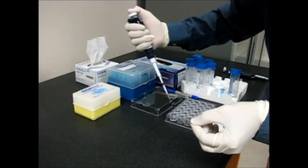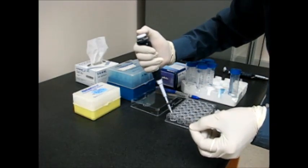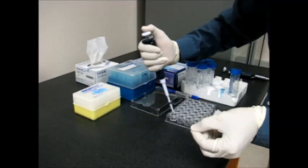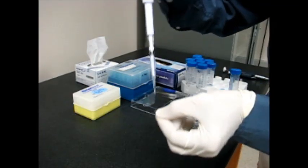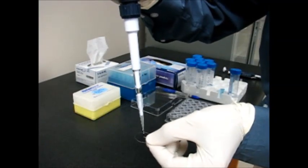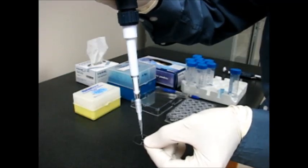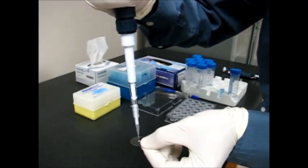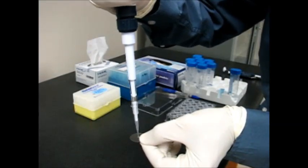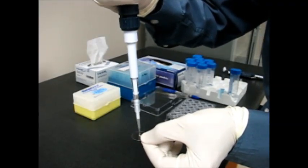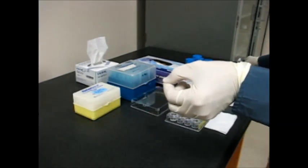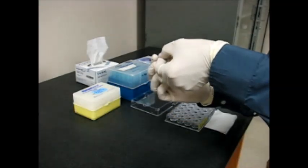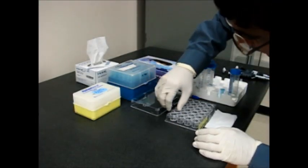I then pick up the precipitant solution from well A1 and add it on top of the protein solution and then gently mix it one, two, three, four times trying to avoid bubbles. Once it has been set up I simply flip the cover slip and put it on top.